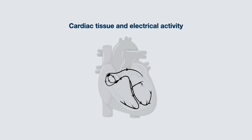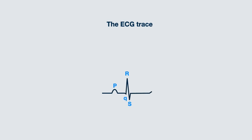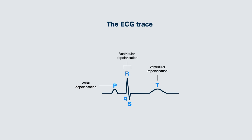On ECG, one would look for features which will help determine the origin of the electrical activity. This is the P, Q, R, S, and T wave. The P wave represents atrial depolarization, the QRS complex ventricular depolarization, and the T wave ventricular repolarization.